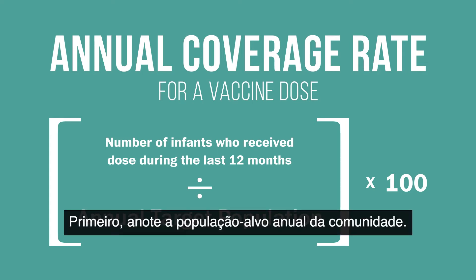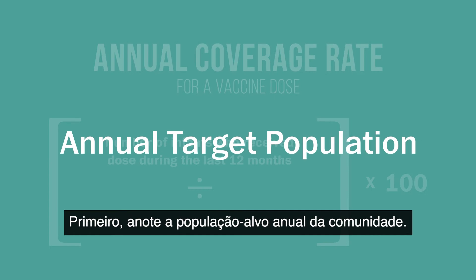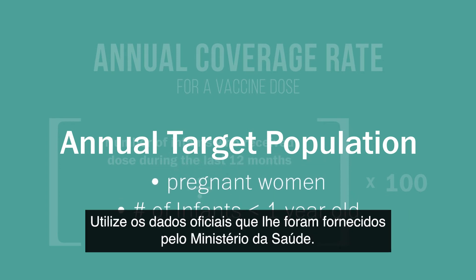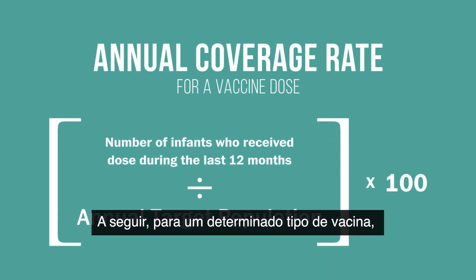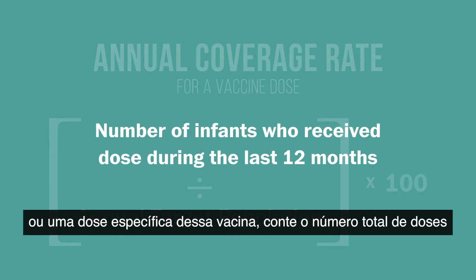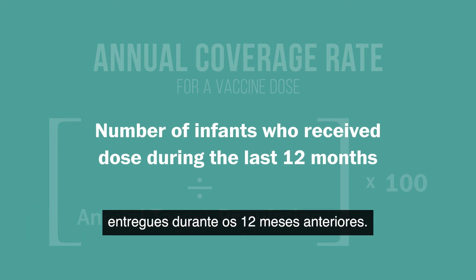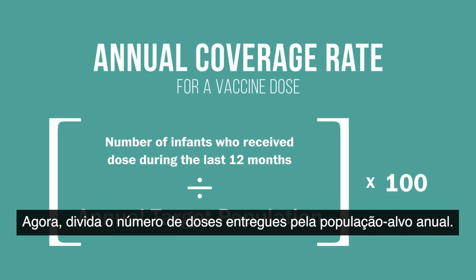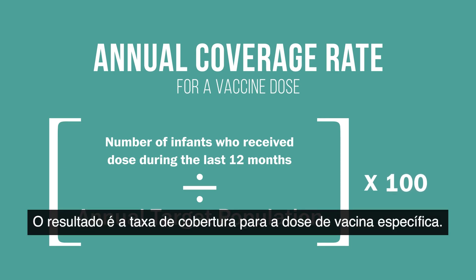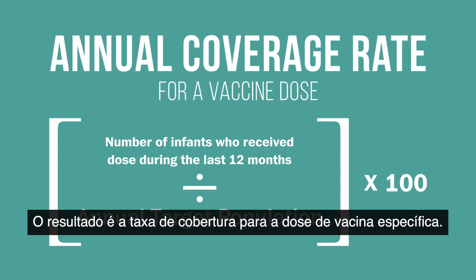First, write down the annual target population for the community. The target population may be the number of infants under one year old or pregnant women. Use the official data given to you by the Ministry of Health. Next, for a particular vaccine type or a specific dose of that vaccine, tally the total number of doses you delivered during the preceding 12 months. Now divide the number of doses delivered by the annual target population and multiply that number by 100. The result is the coverage rate for the particular vaccine dose.